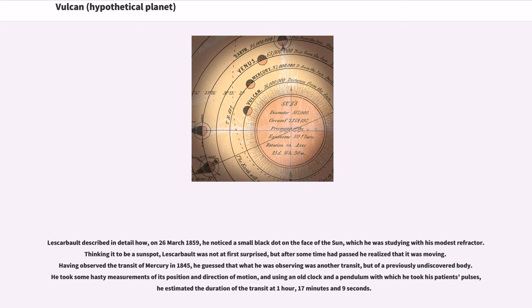Lascarbalt described in detail how, on March 26, 1859, he noticed a small black dot on the face of the Sun, which he was studying with his modest refractor, thinking it to be a sunspot. Lascarbalt was not at first surprised, but after some time had passed he realized that it was moving.